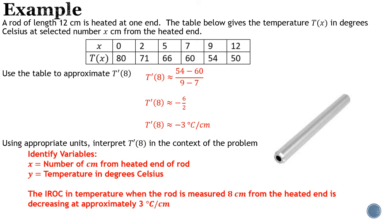For the negative derivative, instead of saying 'negative,' say the temperature is 'decreasing' by approximately 3 degrees Celsius per centimeter. Rearranged into a clean sentence: 'The instantaneous rate of change in temperature when the rod is measured 8 centimeters from the heated end is decreasing at approximately 3 degrees Celsius per centimeter.' Your answer may differ slightly, but it must include all basic information: y before x, the derivative value, and the units.